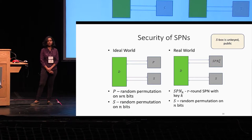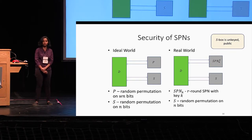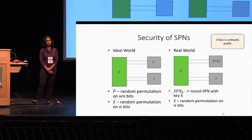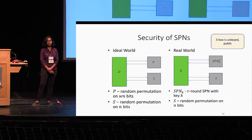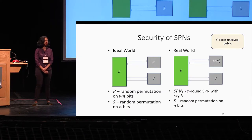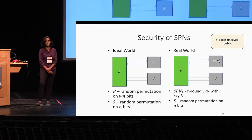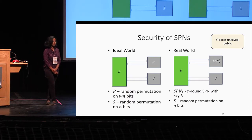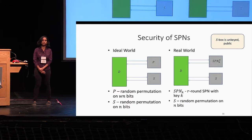In the ideal world, the distinguisher D has access to a random permutation P on WN-bit inputs and a random permutation S on N-bit inputs. In the real world, D has access to a random permutation S on N-bit inputs and an SPN with access to this S under key K — a permutation on WN-bit inputs. If D cannot distinguish between these two worlds with high probability, we consider the SPN to be secure. The distinguisher is computationally unbounded but can only make a bounded number of queries.